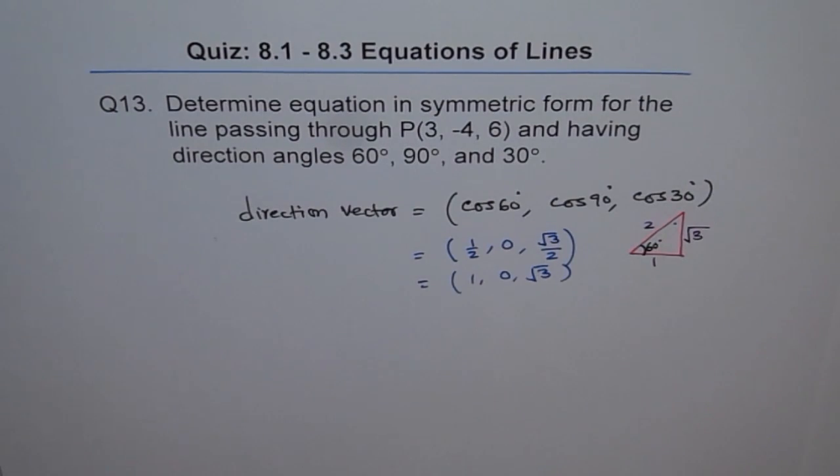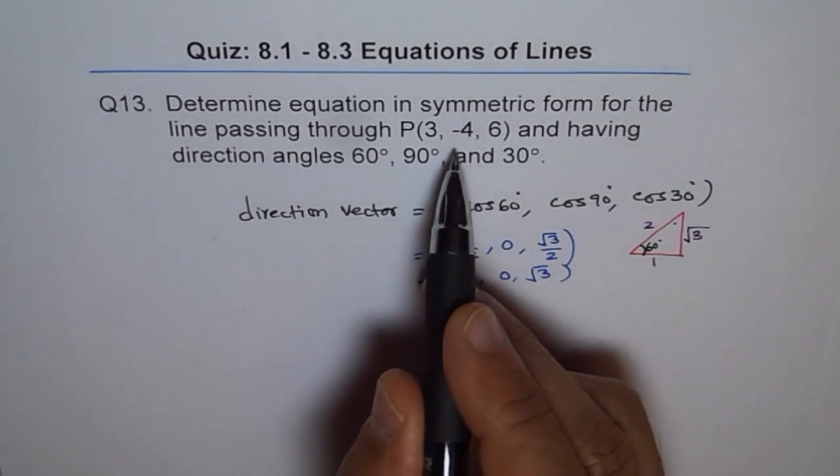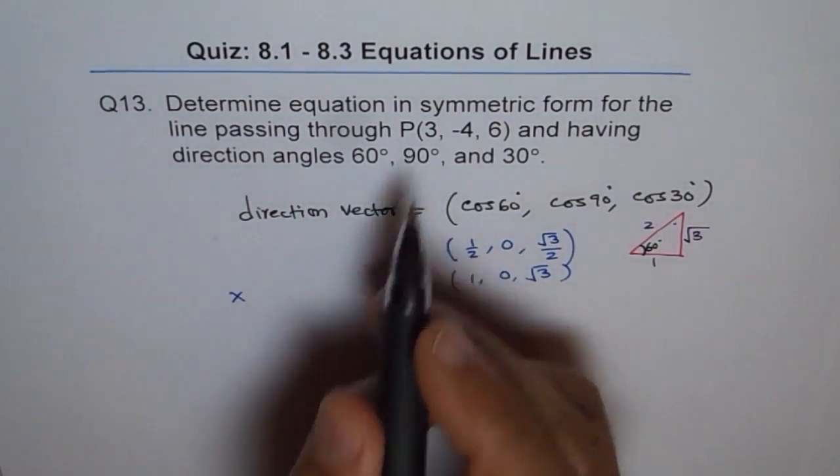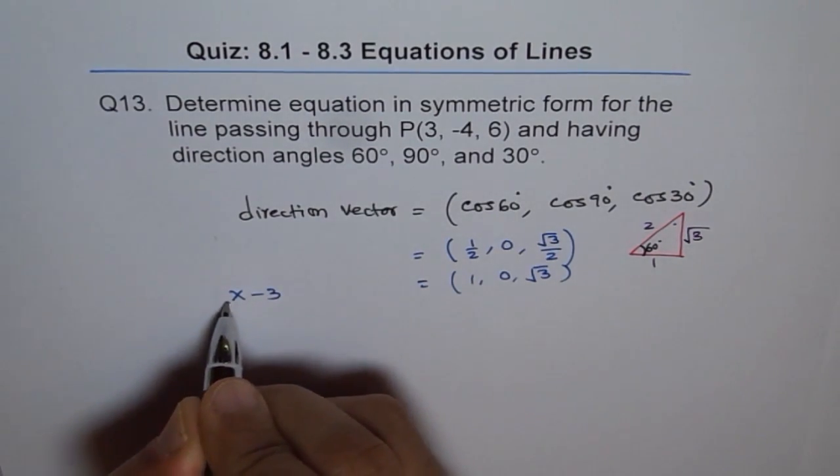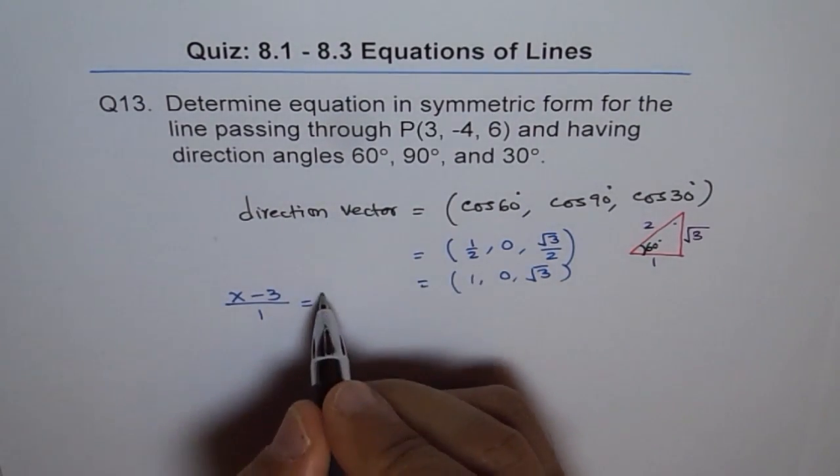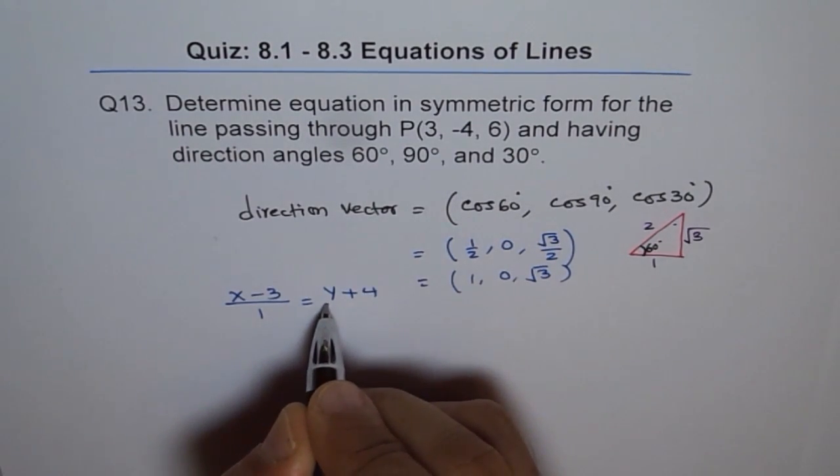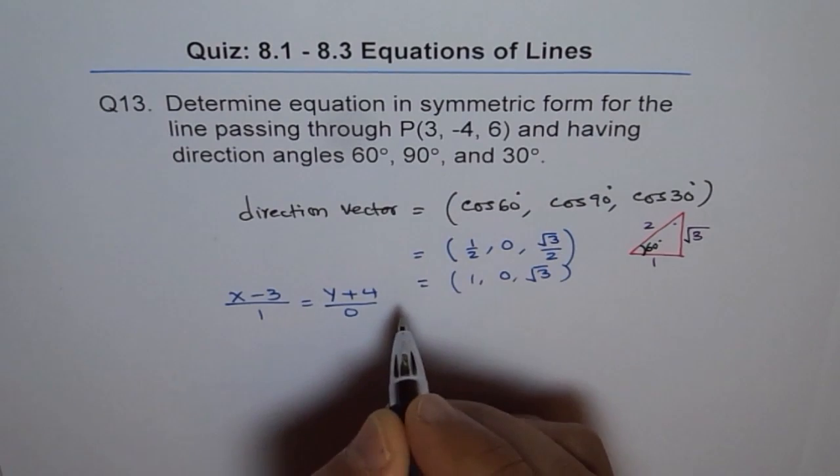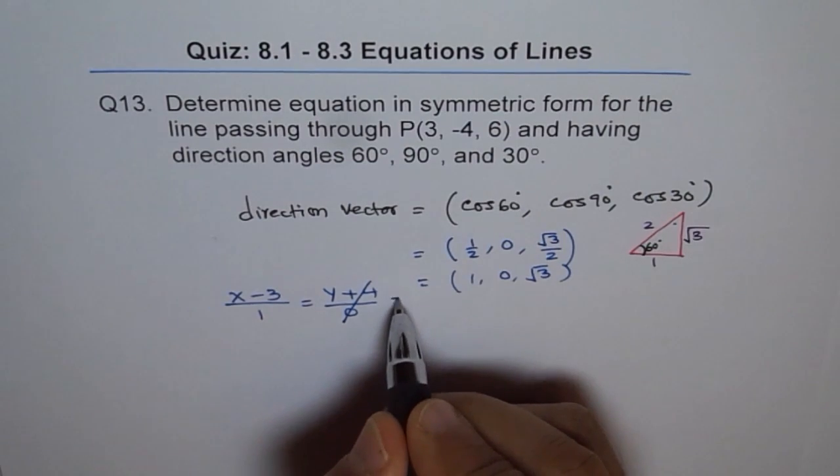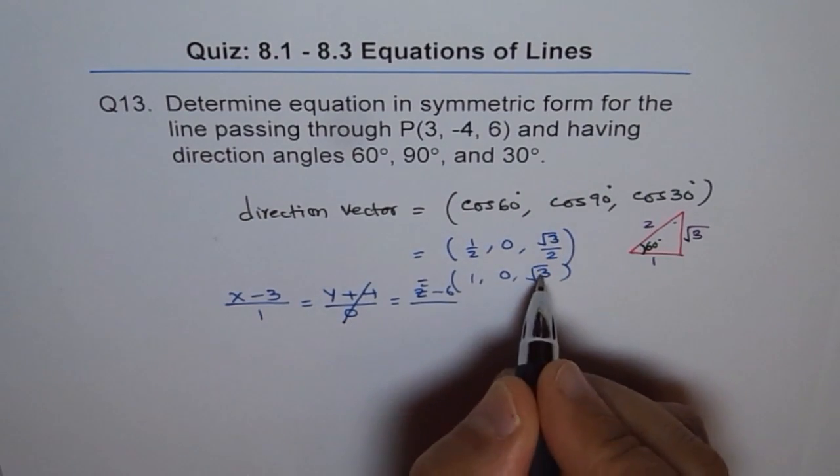And therefore, now we can write equation in symmetric form. So the point given is 3, -4 and 6. So equation in symmetric form is x minus 3 over 1, which equals y minus minus 4, so it becomes y plus 4 over 0. You can't write this, okay? I will tell you how to do this. This cannot be written.